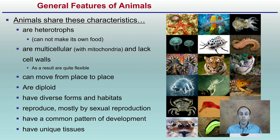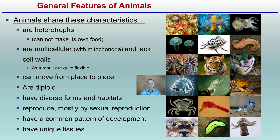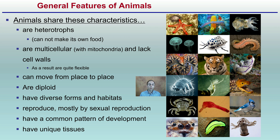Looking at the general features of animals — and I do qualify, as do all humans. Animals are heterotrophs, meaning they do not make their own food; they need to consume it. Plants and autotrophs are the ones that make their own food. Animals are multicellular, have mitochondria but lack a cell wall, so animal cells can be quite flexible and move from place to place. They're diploid, have diverse forms and habitats, reproduce mostly by sexual reproduction, have a common pattern of development, and have unique tissues.